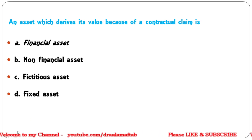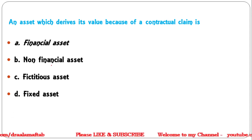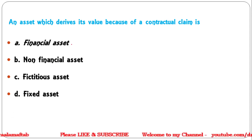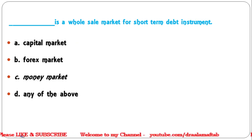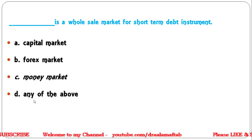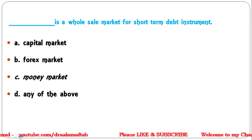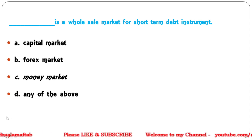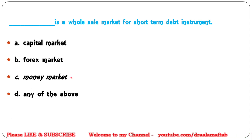Next question: an asset which derives its value because of a contractual claim is called — financial asset, non-financial asset, or fixed asset? The correct answer is financial asset. Next question: what is a wholesale market for short-term debt instruments — capital market, forex market, money market, or any of the above? The correct answer is money market.